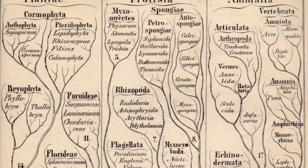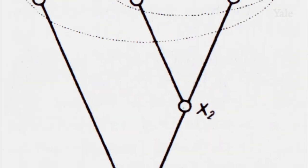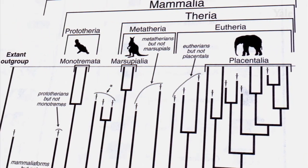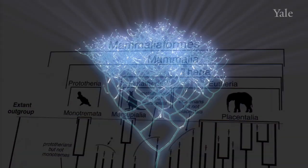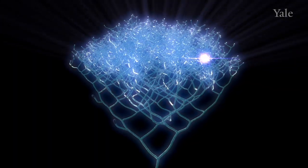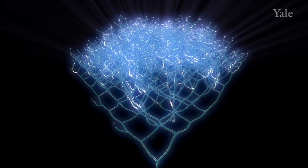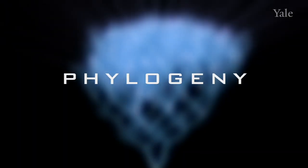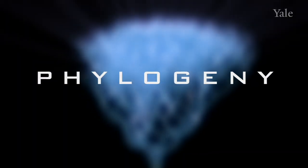Ever since Darwin, scientists have attempted to reconstruct the historical relationships among species. Today, evolutionary biologists refer to the Tree of Life as a phylogeny. Phylogeny is a history — a history of branching within a lineage, within a group of species.